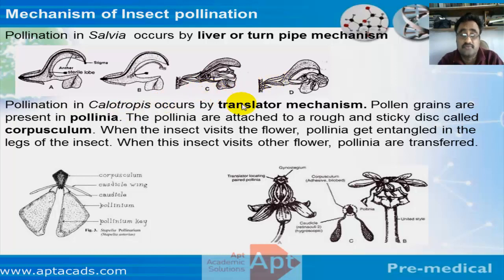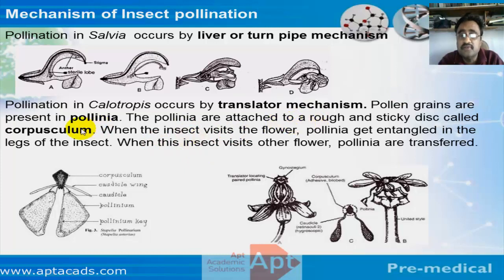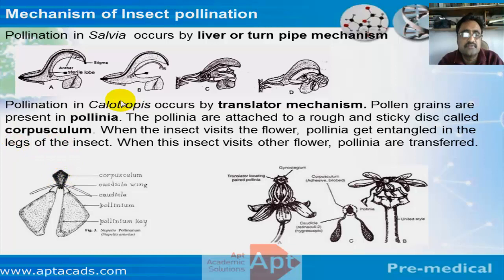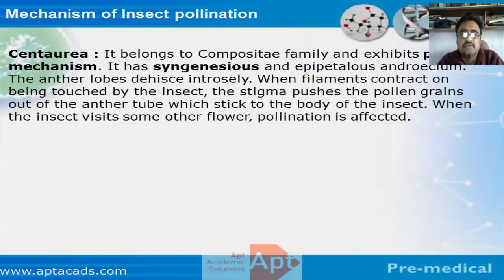Another mechanism is seen in calotropis, which we also discussed under herkogamy — there is a physical barrier between male and female sex organs in the form of compound pollen grains called pollinia. The corpusculum at the top causes the insect's legs to become entangled. When the insect escapes the flower, the entire pollen grain is carried away. When the insect reaches another flower, the pollen is transferred, effecting pollination.